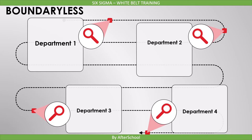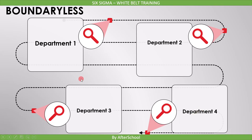The next philosophy is boundaryless. It means we shall not restrict ourselves to one particular department. This is because input to our department comes from another department, and that is the reason we need to have integration with other departments. Similarly, your department's output will be some other department's input. Therefore, instead of boundaries, we should have interactions between the departments.